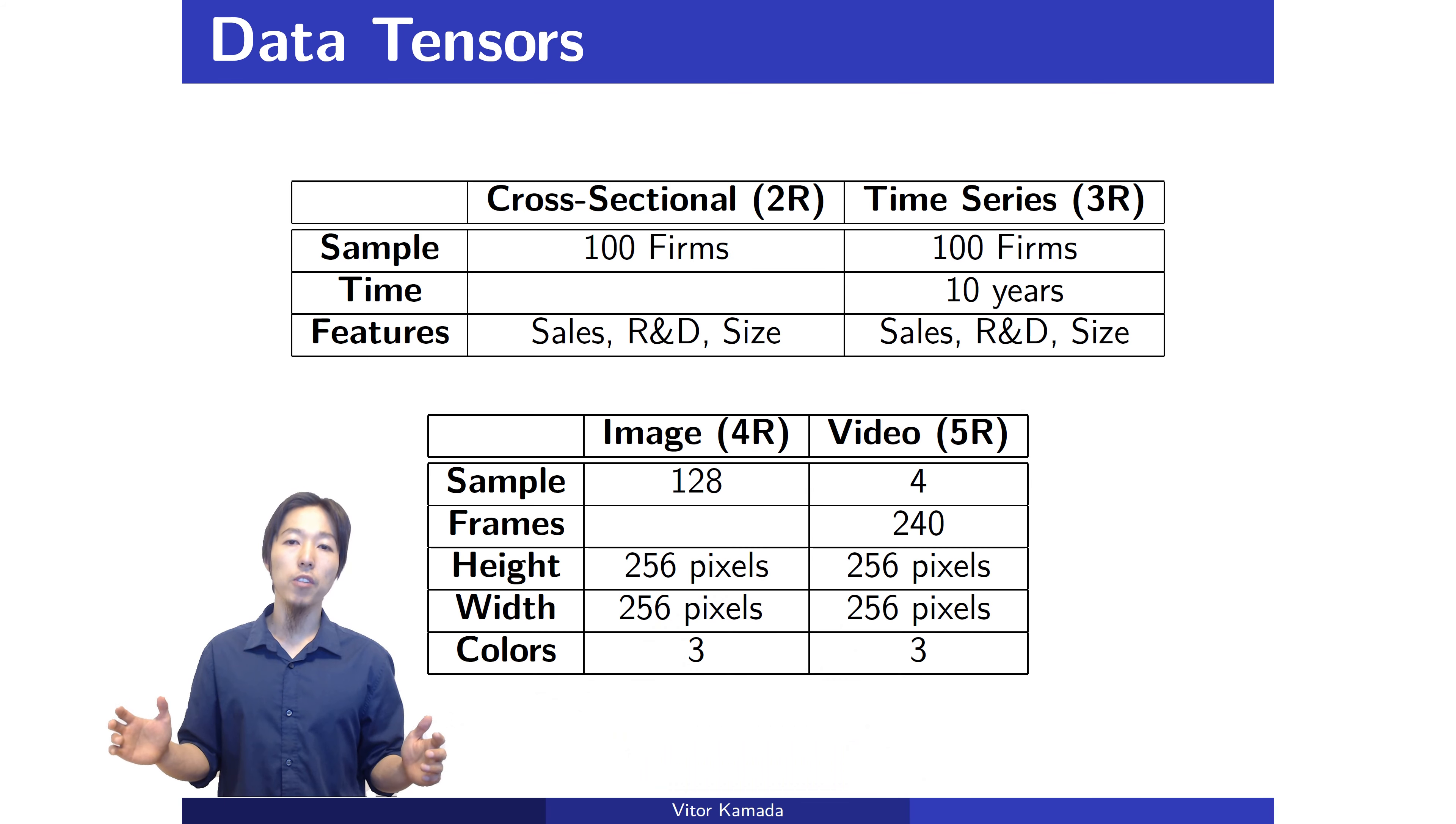Image is four rank because you have sample, height, width, and color. And the video is just a sequence of frames. Then it's a tensor of rank five.